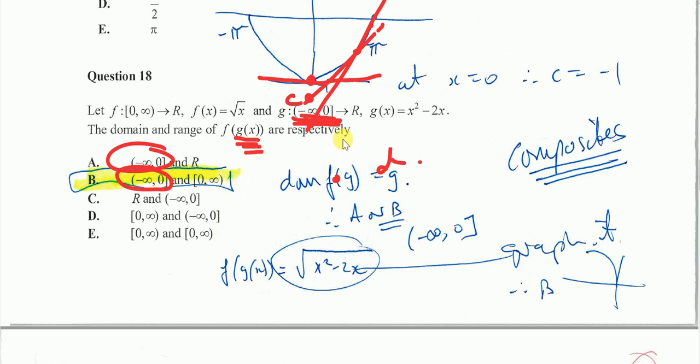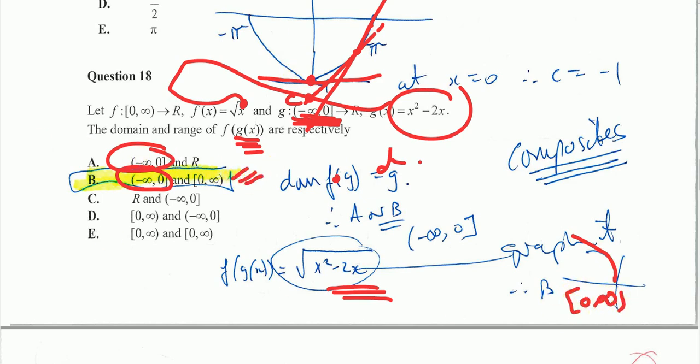I need to put g inside of f, and graph it on a calculator, over the domain minus infinity to 0, gives this particular graph. And its range is 0 to infinity. Therefore, B is my right answer. It is very important. Thank you.